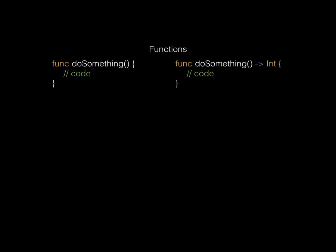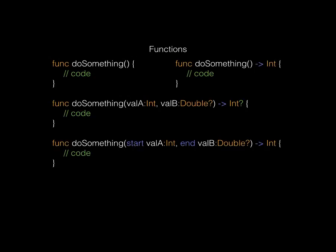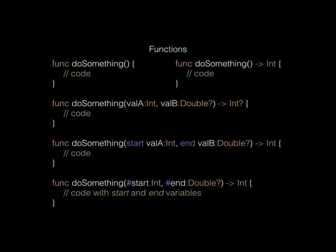Functions are declared using the keyword `func`. The return type uses a hyphen with an angle bracket `->` followed by the data type. When receiving values in a function, you put in your parameters and indicate whether they're optional. You can declare named labels — when calling the function, those named values appear as prefixes. Using a hash `#` before a parameter name means the variable name itself is used as the label automatically.